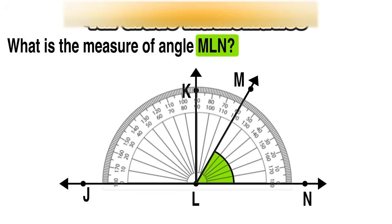Now we can use the top ray, in this case the line that starts at point L and goes through point M, and see what measurement it is aligned with on the protractor. The protractor shows us that angle MLN has a measure of 60 degrees.